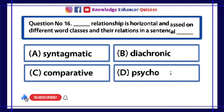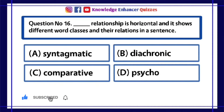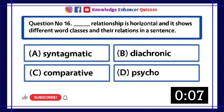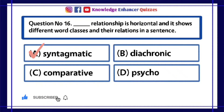Question Number 16: Dash relationship is horizontal and it shows different word classes and their relations in a sentence. A. Syntagmatic, B. Diachronic, C. Comparative, D. Psycho. Option A is the right answer.